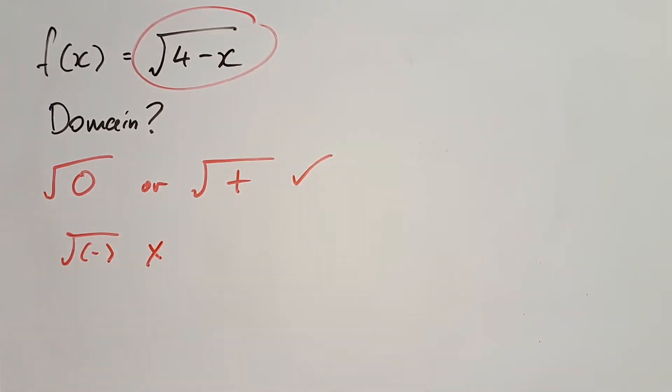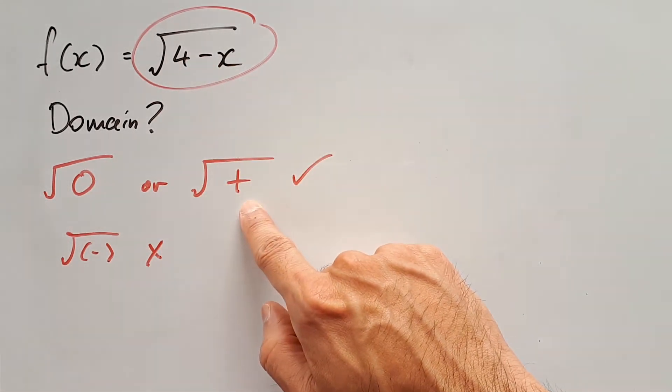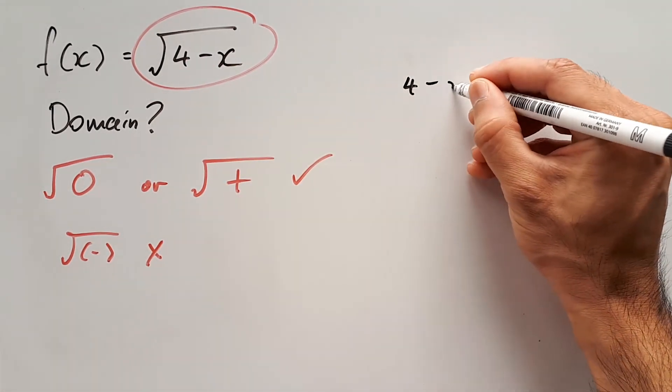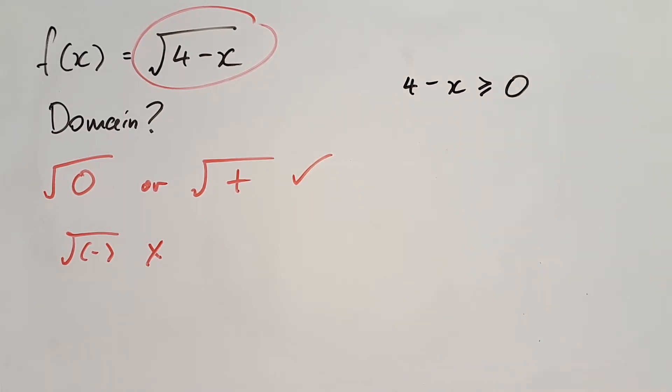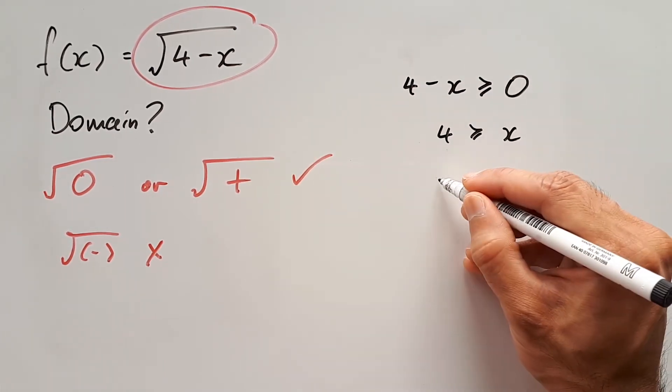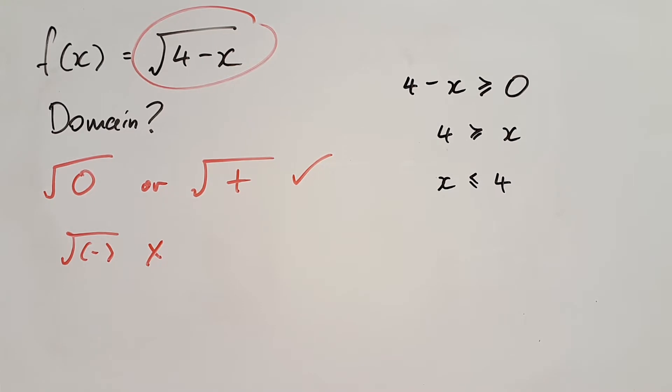So to find our restriction, all we need to do is set up 4 minus x to equate to 0 or something positive. We do this by writing 4 minus x is greater than or equal to 0. Rearrange the inequality and we will find that x is less than or equal to 4.